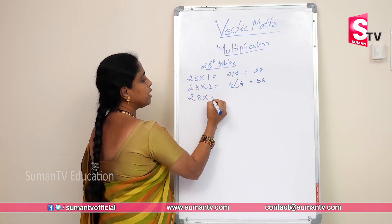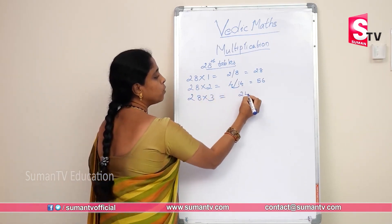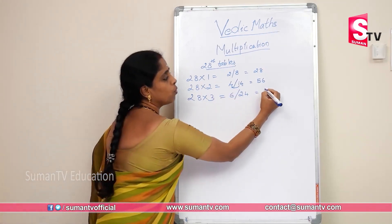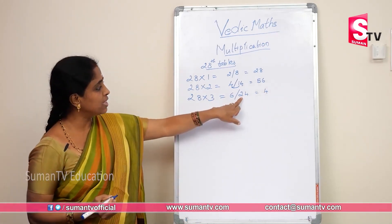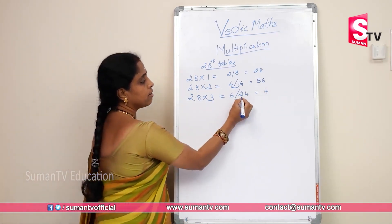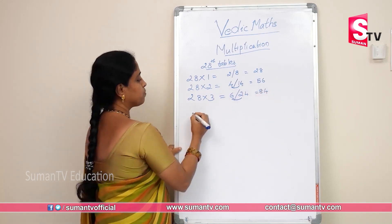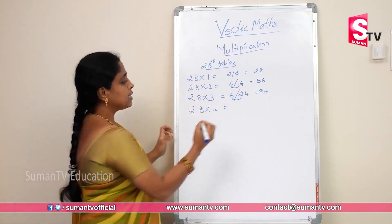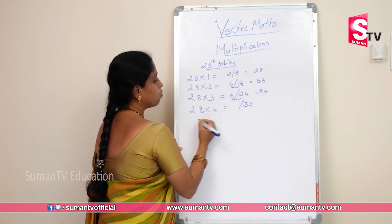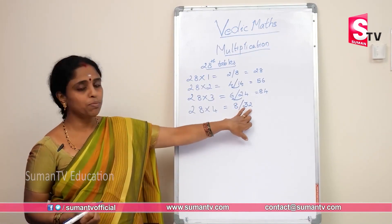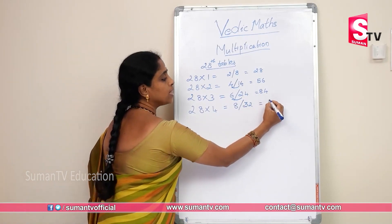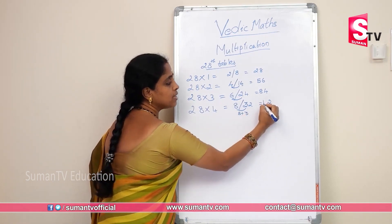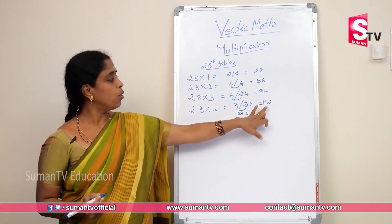Next, 28×3: 8×3 is 24, 3×2 is 6. Carry 2, put 4 in unit place. Add 1 to 6 — 6 plus 2 is 8. So 28×3 is 84. Then 28×4: 4×2 is 8. Add carry — 8 plus 3 is 11. So 28×4 is 112.